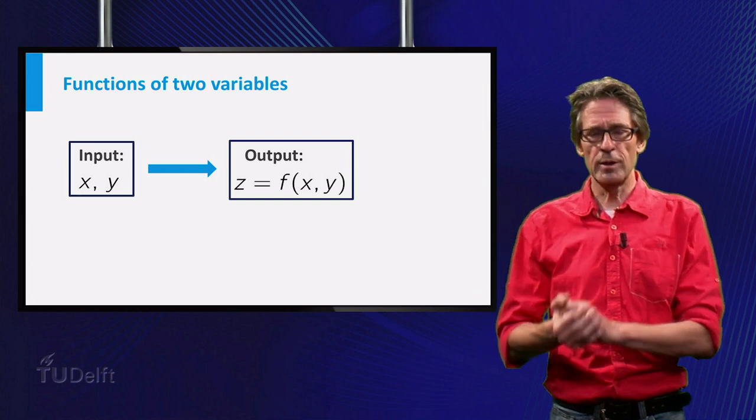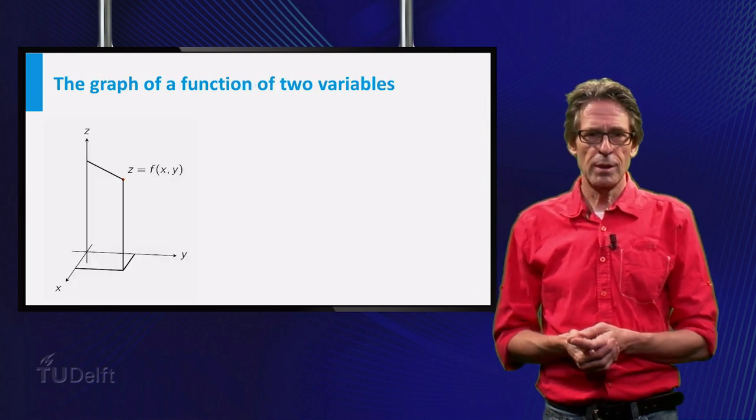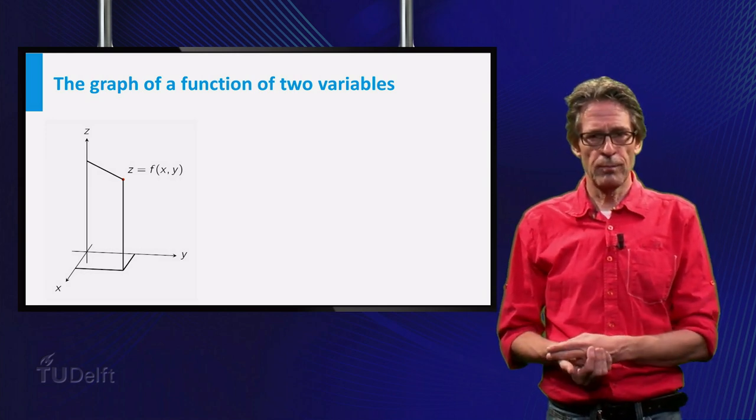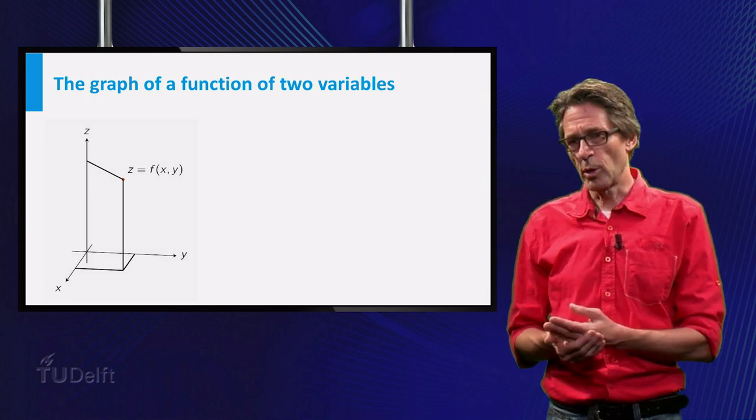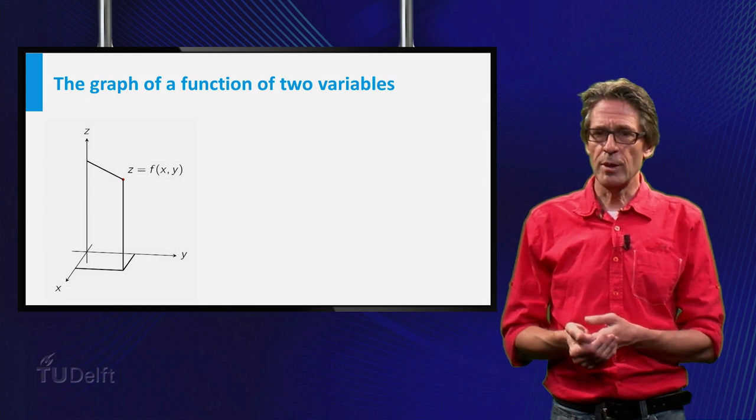To construct it we need an x-axis and a y-axis for the input variables and a third axis, say a z-axis for the function values. The picture shows one point of a graph which is now a point in three-dimensional space.